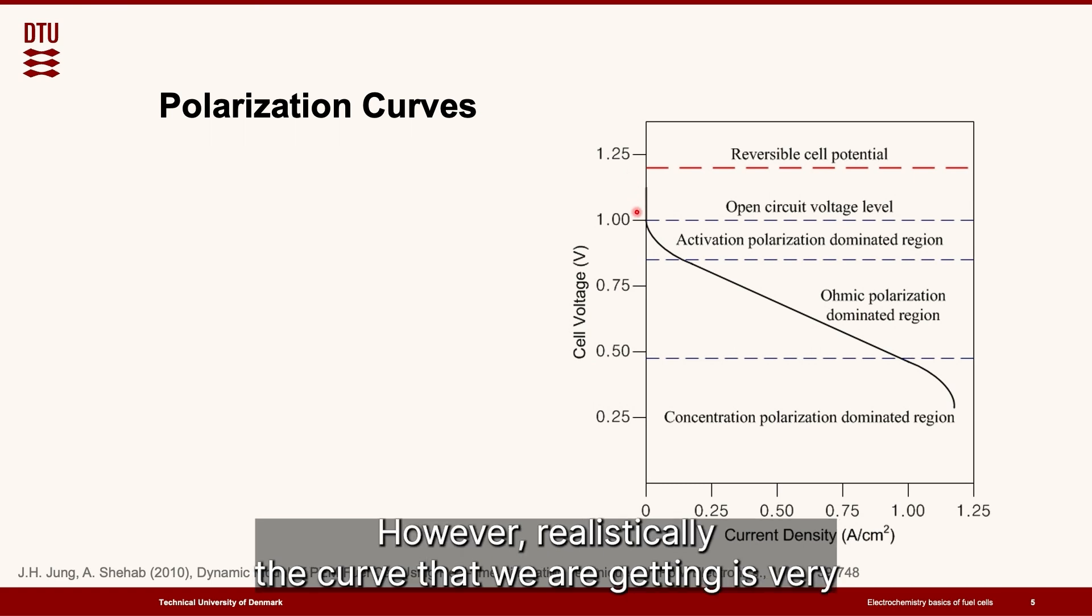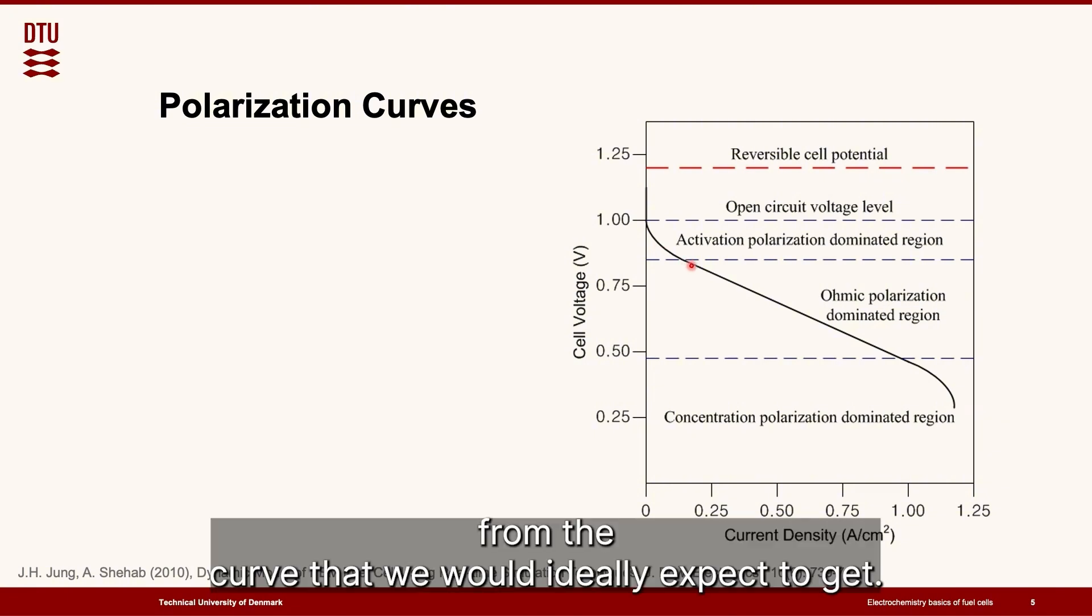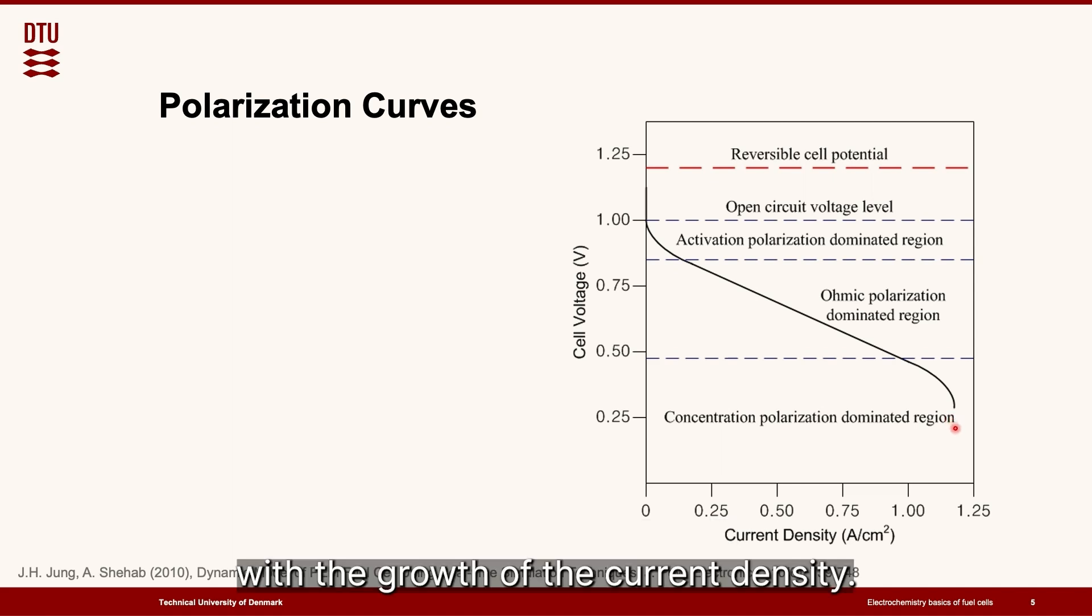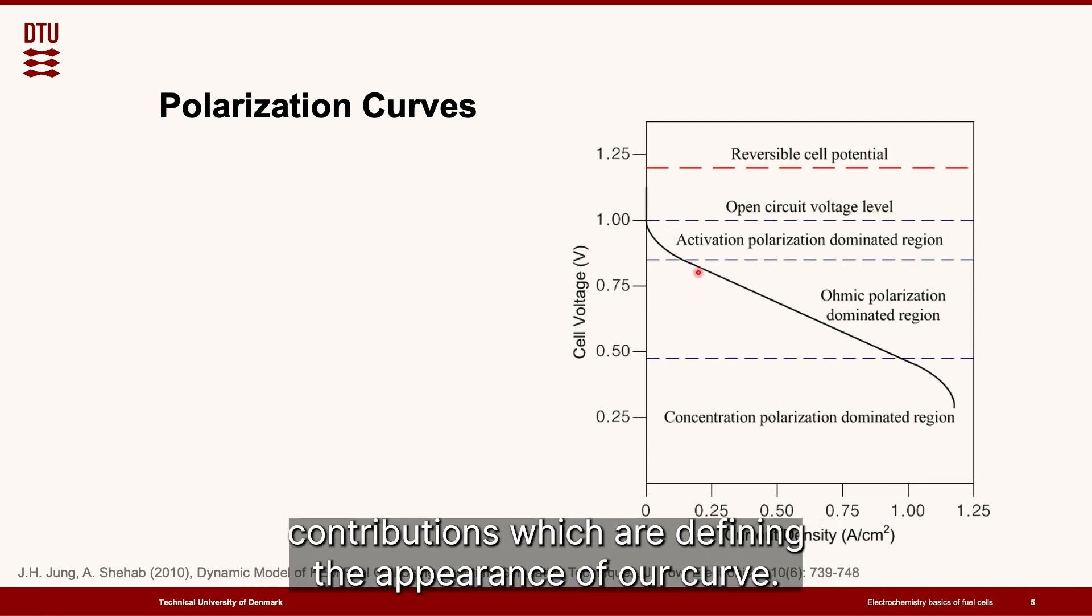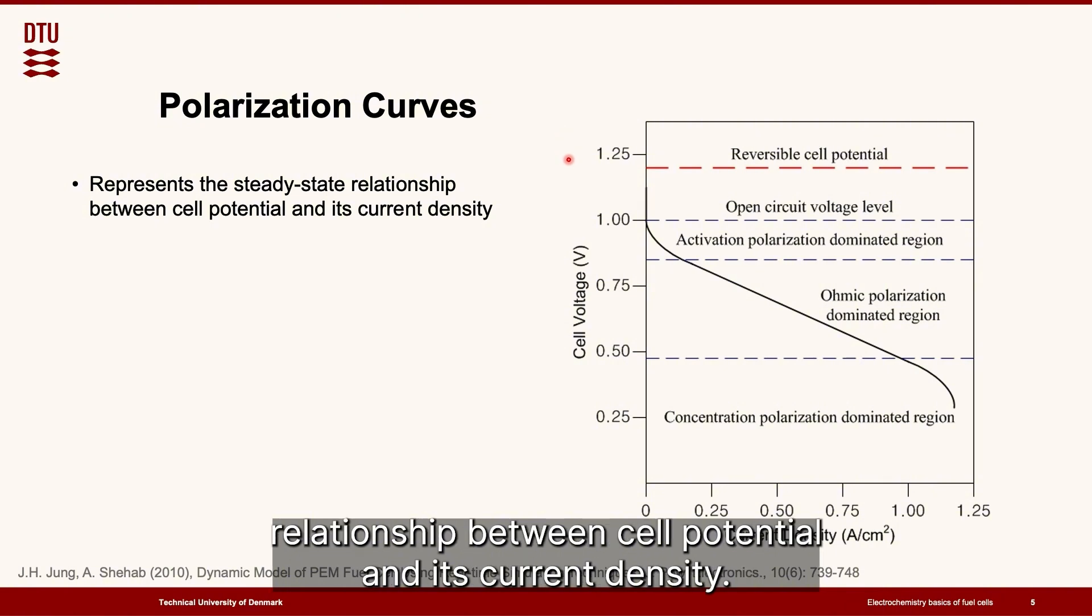However realistically the curve that we are getting is very different from the curve that we would ideally expect to get. And as you can see it decreases by quite a lot with the growth of the current density. The reason being that there are a lot of external and internal contributions which are defining the appearance of our curve. So overall our polarization curves represents the steady state relationship between cell potential and its current density.